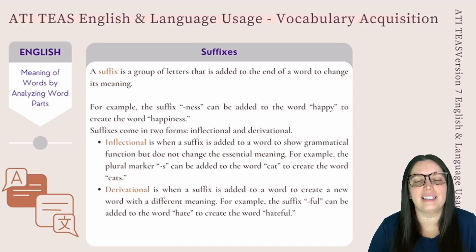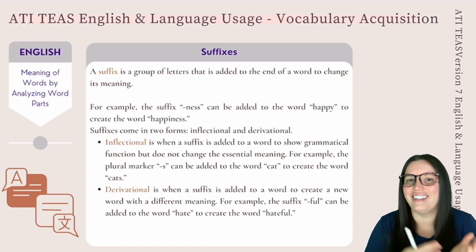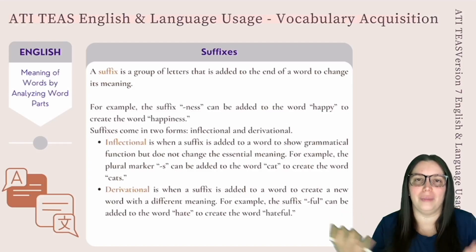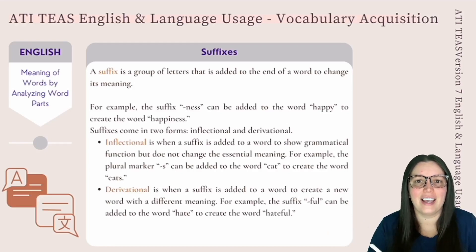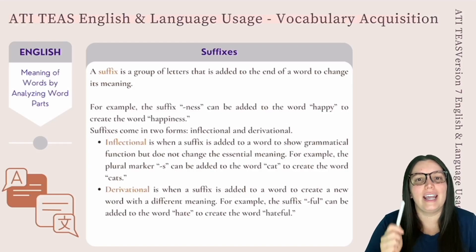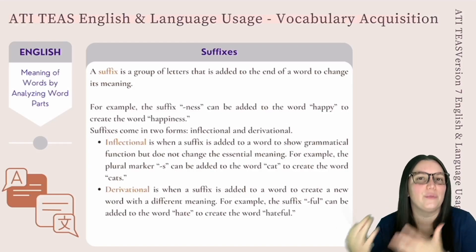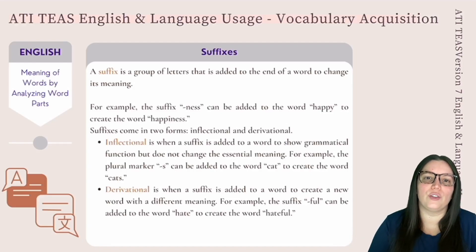Inflectional is when a suffix is added to a word to show grammatical function but does not change the essential meaning. For example, the plural marker "-s" can be added to "cat" to create "cats." Derivational is when a suffix is added to a word to create a new word with a different meaning. For example, the suffix "-ful" can be added to "hate" to create "hateful."